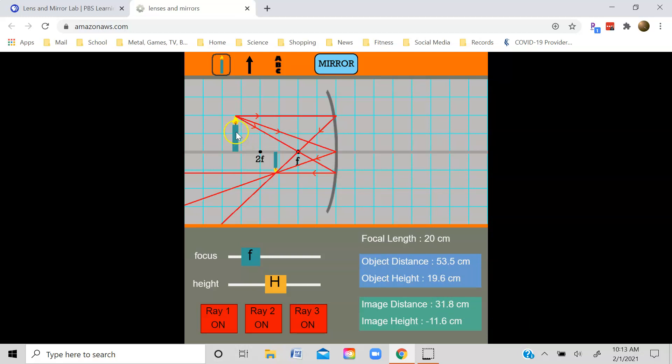Now I'm going to move the object here to the focus. And then notice that the reflected light rays here and here are parallel to each other. So therefore, the image forms at infinity. And then let's take the object and move it closer to the mirror than the focus.